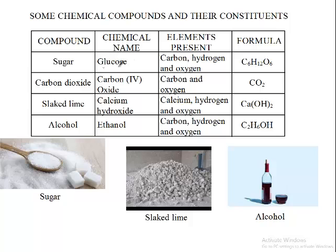The chemical name for sugar is glucose. It is made up of carbon, hydrogen, and oxygen atoms. In the formula C6H12O6, there are 6 carbon atoms, 12 hydrogen atoms, and 6 oxygen atoms. We add them up and then we get 24 atoms in sugar.